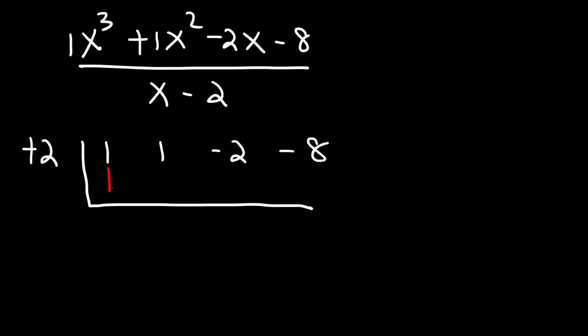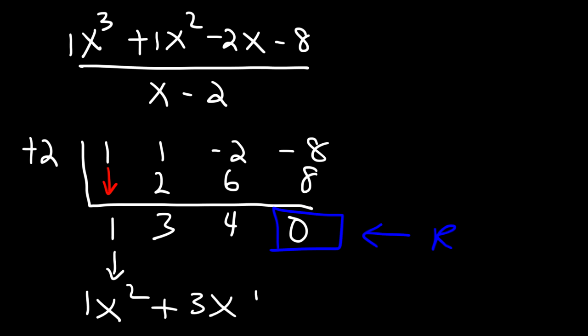So let's bring down the first coefficient, which is 1, and then multiply. 2 times 1 is 2, and then add 1 plus 2 is 3. 2 times 3 is 6, negative 2 plus 6 is 4, and 2 times 4 is 8. And once again, we have a remainder of 0. So this is going to be 1x squared, and then plus 3x plus 4. And so that's the answer, x squared plus 3x plus 4.